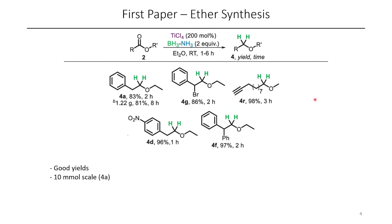A couple highlights of the scope are shown here. In these cases you can see not only benzylic esters were used — there are many examples in the paper aside from the benzoate esters, just to show that this is a really useful methodology. Here you can see mostly ethyl esters were the starting materials forming ethyl ethers as the products, and you can also have some interesting functional groups such as this nitro group, which wasn't reduced, this bromide, which was tolerated, as well as this alkyne.